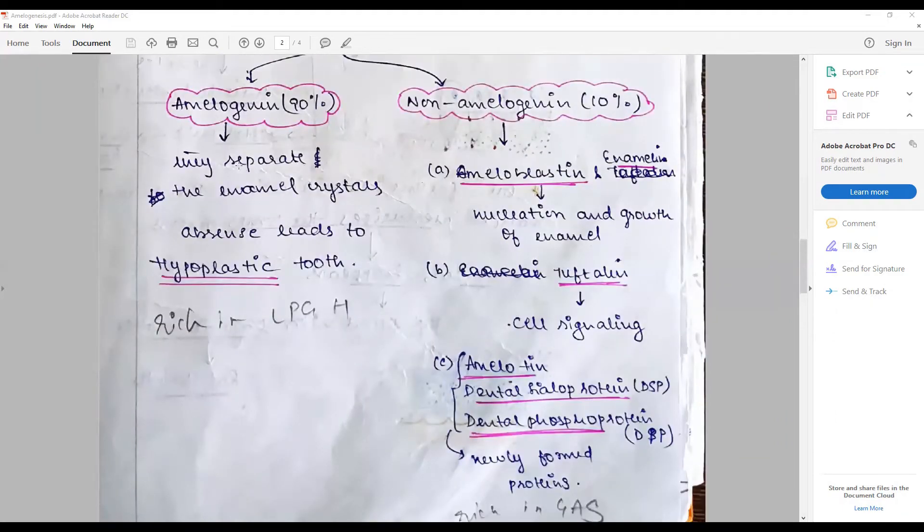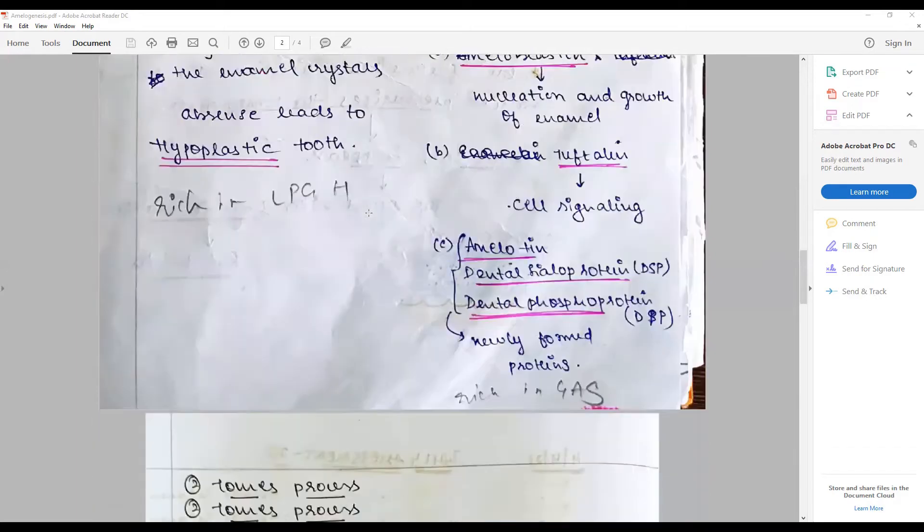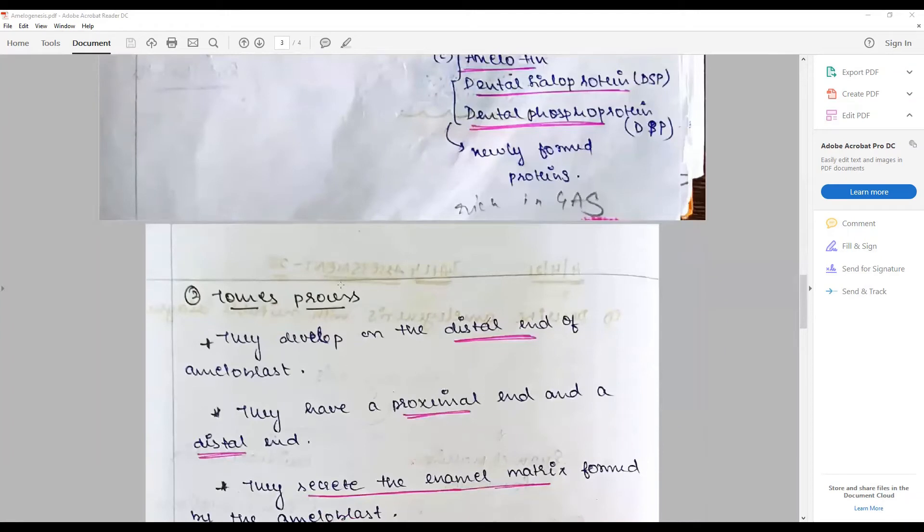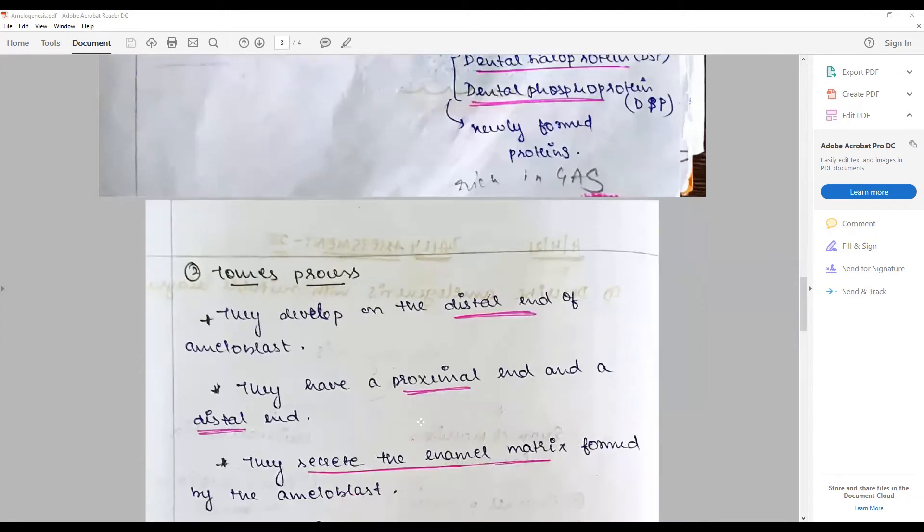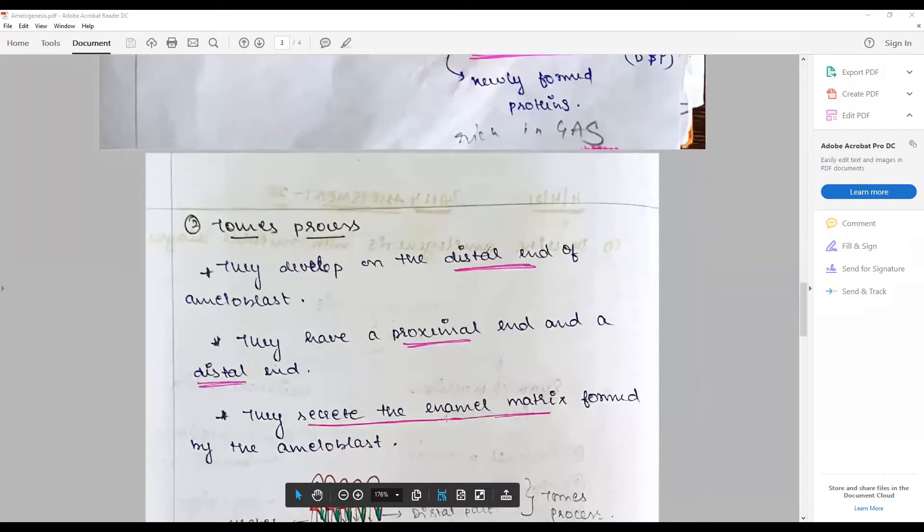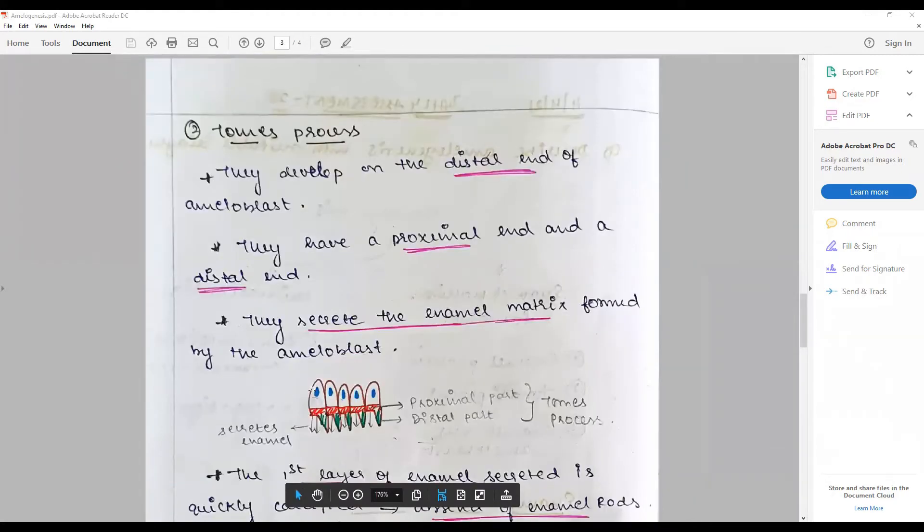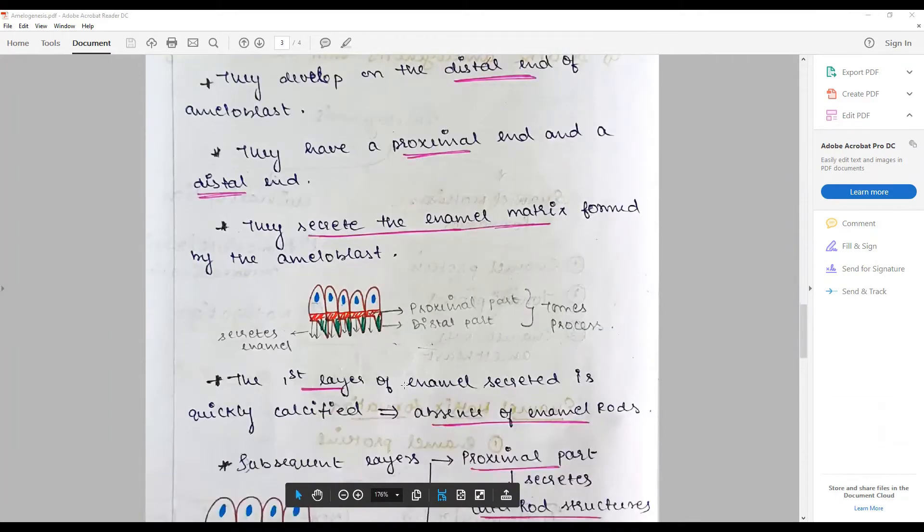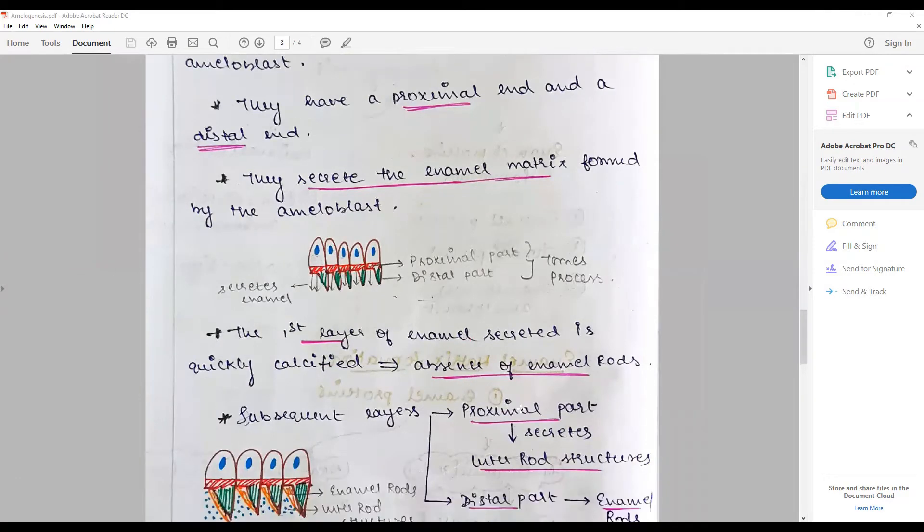The Tomes process develops on the distal end of ameloblast and is associated with secretion of matrix formation. Draw brief diagrams showing how the ameloblastic first layer of enamel secreted is quickly calcified and there is absence of enamel rod.